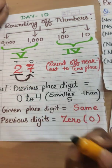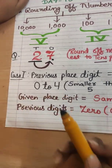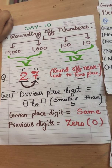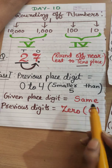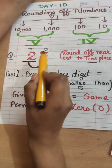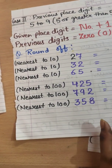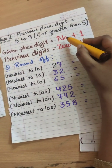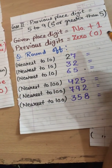Case 1: If the previous place digit is from 0 to 4 — that is, smaller than 5 — the given place digit will remain the same and all previous digits will become 0. Case 2: If the previous place digit is 5 to 9 — that is, greater than or equal to 5 — the given place digit becomes one step greater by adding 1, and all previous digits become 0.